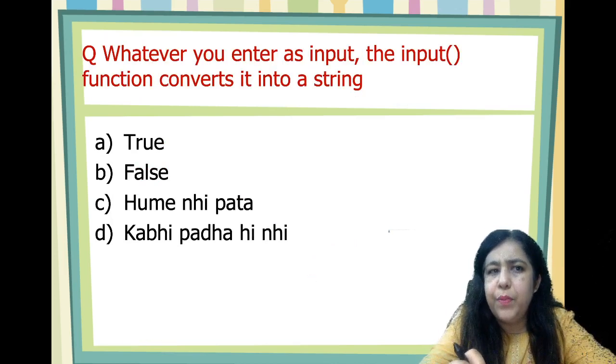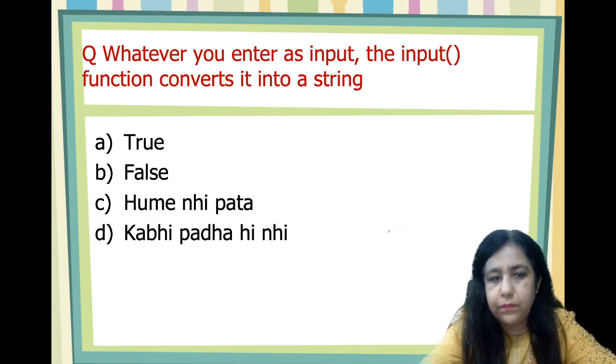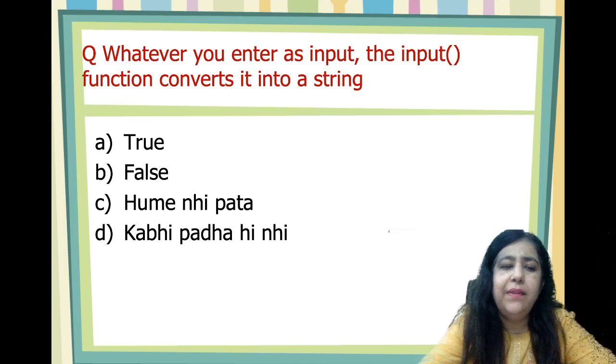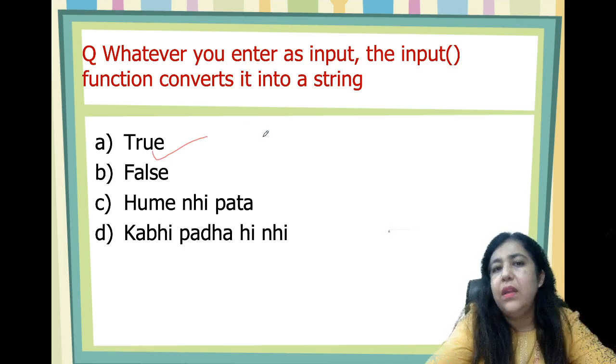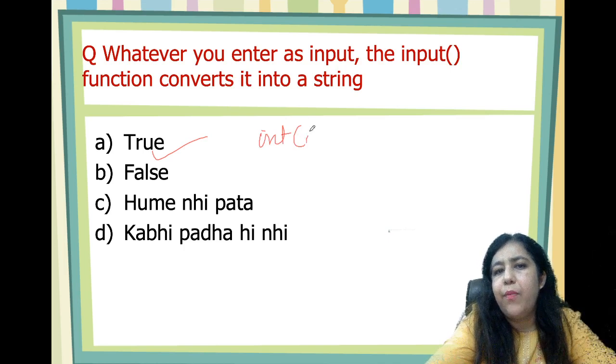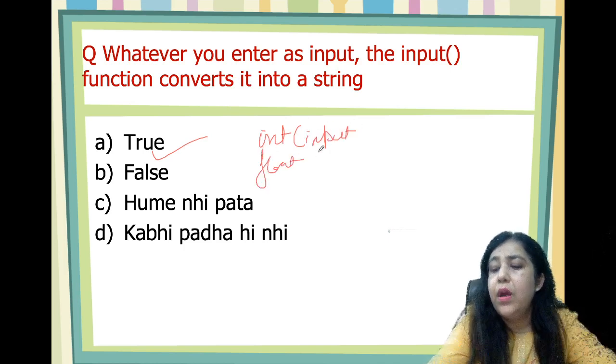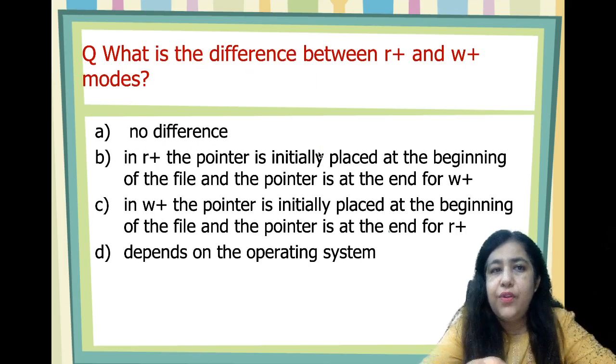Whenever you enter as input, the input function converts it into a string. True. When we read anything in Python, we always read anything from the input function. When you read anything from the string, it will always be read in the format. If you have to convert into integers, then you have to write int input, or float input, or eval input. But by default, it is entered as a string.